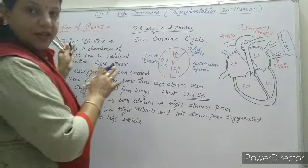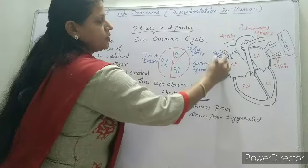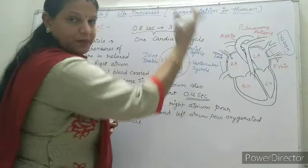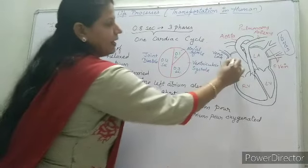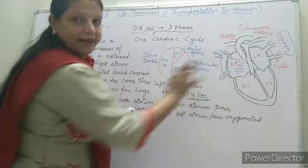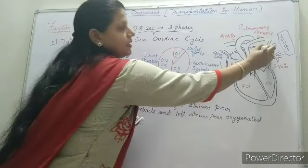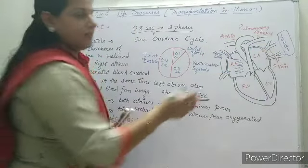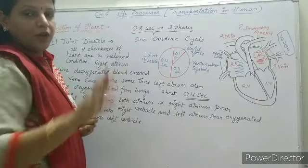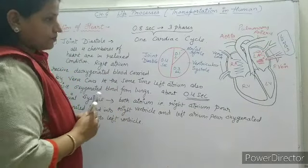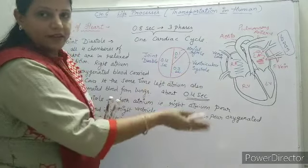During joint diastole, deoxygenated blood from vena cava — both superior and inferior vena cava, which collect blood from the upper and lower sides of the body — gets filled into the right atrium. At the same time, oxygenated blood from the lungs enters into the left atrium through the pulmonary vein. This is the joint diastole phase in which all the muscles are in a relaxed position.